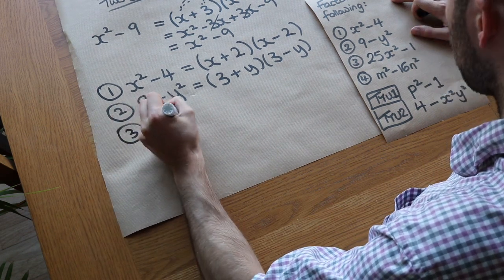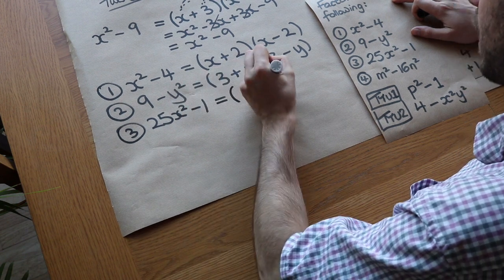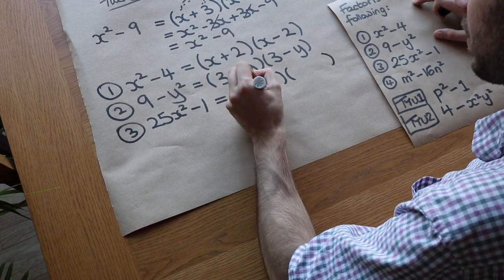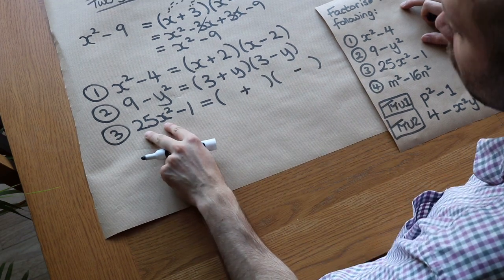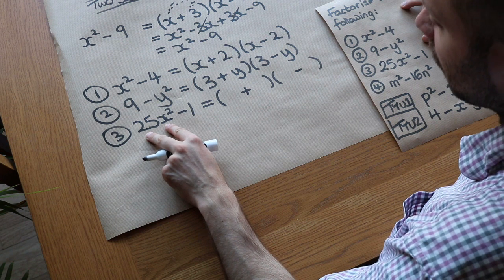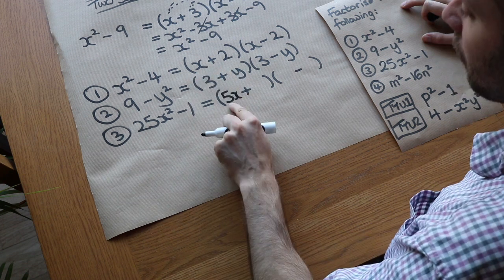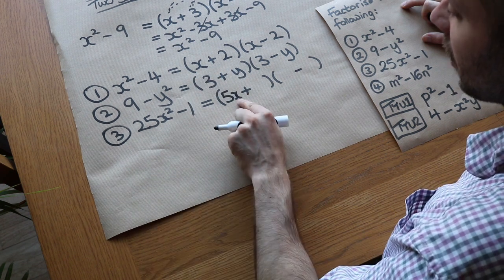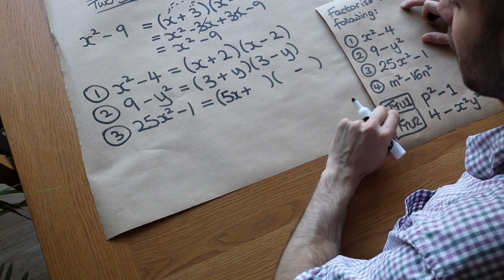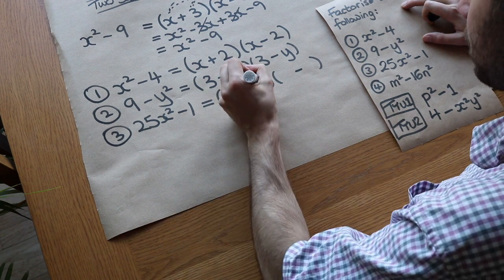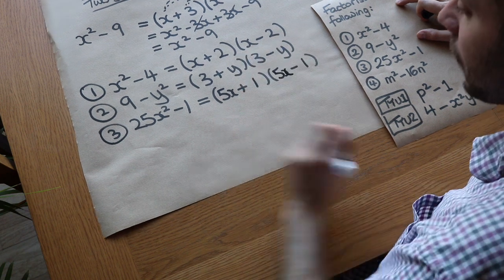Next: 25x squared minus 1. Two brackets, one plus, one minus. What's the square root of 25x squared? Well, 5x times 5x gives 25x squared — the 5 times 5 gives 25, and x times x gives x squared. So the first term is 5x. The square root of 1 is 1, so we put 1 as the second term. That completes the factorisation.